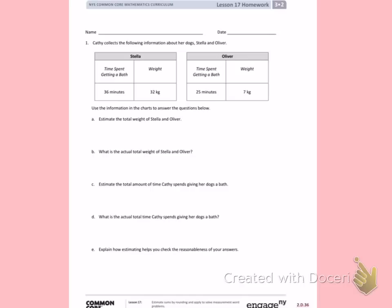A. Estimate the total weight of Stella and Oliver. So I'm going to estimate their total weight. I will estimate on a number line. So I'll start with Stella, and I'll think about what 10s her weight fits between. 32 is her weight. Her weight would fit between 30 and 40, with the halfway number being 35. If I plot 32 on the number line, it would be about here. 32 has not gone past the halfway number, so I will round 32 down to 30.